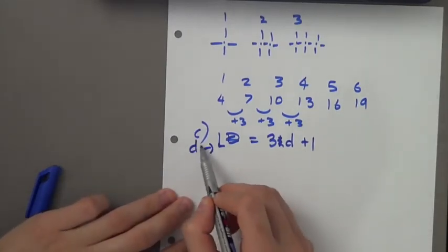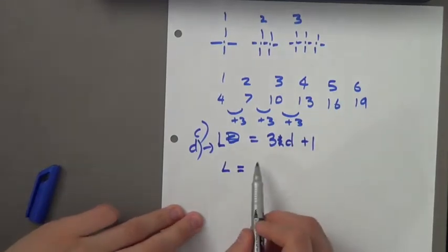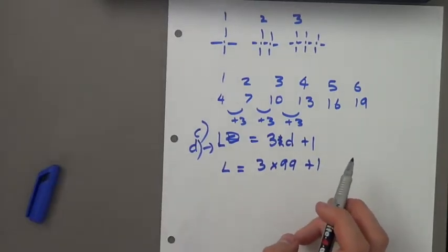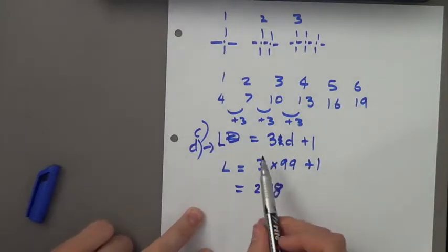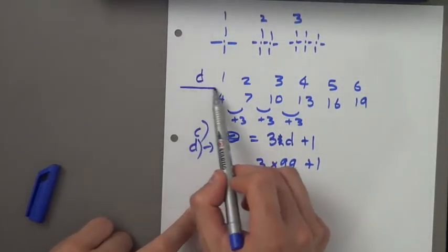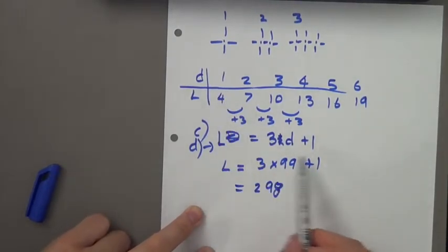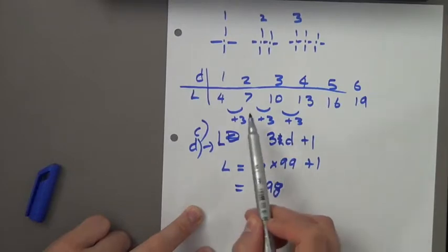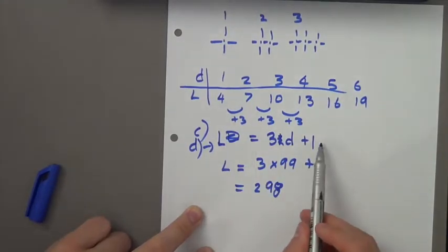Going back to part C: how many lines are in the pattern with 99 dots? L equals 3 times 99 plus 1. If you did that on your calculator you would get 298. Just to recap: D stands for the number of dots and L stands for the number of lines. We put 3D because we're adding three each time to the lines, and plus 1 because we need to add 1 to get from 3 to 4 for the first pattern.